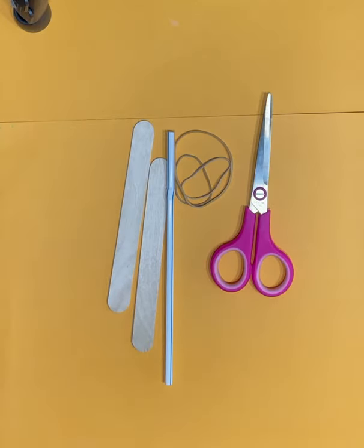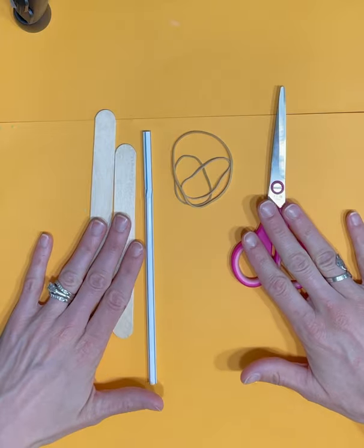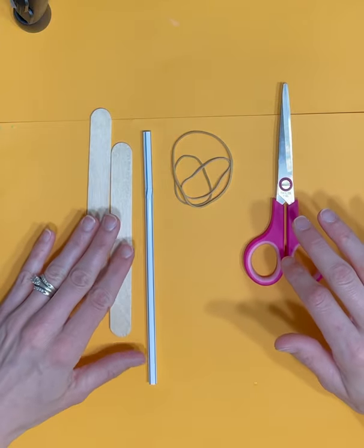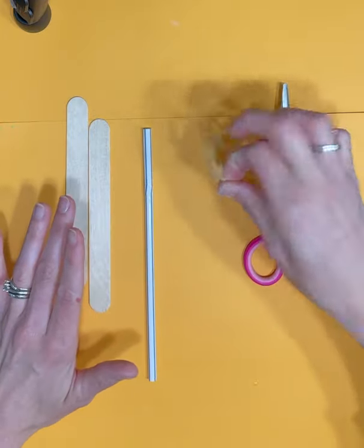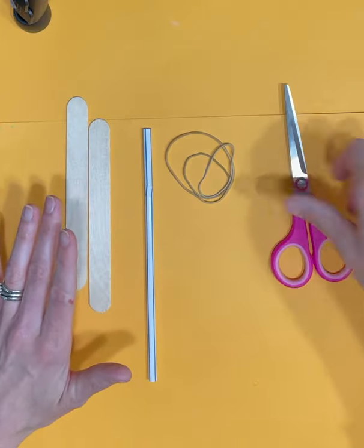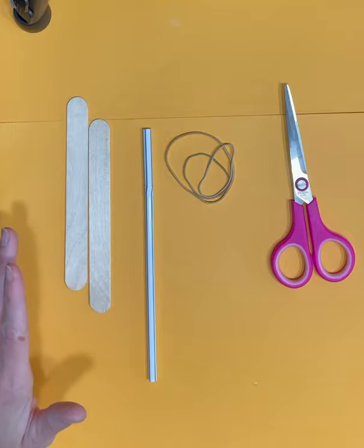Hi everyone, so today's activity is called a craft stick harmonica. We're going to be able to make some music or some noise with these simple materials. The first thing you're going to need is some large craft sticks or large popsicle sticks, a straw, three rubber bands, and a pair of scissors.